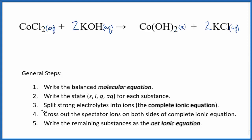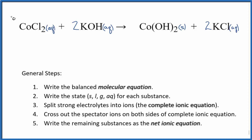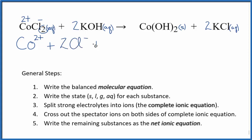Next, we'll split the strong electrolytes into their ions for the complete ionic equation. We don't know the ionic charge on cobalt because it's a transition metal, but the chloride ion is always 1 minus, and since we have two of them, cobalt has to be 2 plus. So we'll have the cobalt 2 ion plus two chloride ions — 2 Cl minus. Potassium is in group 1, so it'll be 1 plus, and hydroxide is 1 minus. So we have two potassium ions and two hydroxide ions.